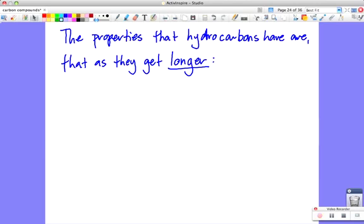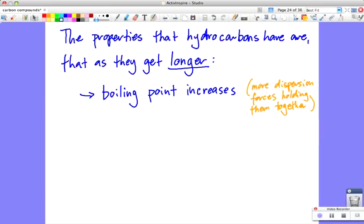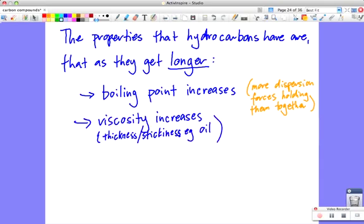So the properties that hydrocarbons have are that as they get longer, what happens? Their boiling point increases. And why would that be? That's because the longer they are, the more electrons they have floating around them, the more chance they have of these instantaneous dipoles, these dispersion forces holding them together. The longer hydrocarbons get, the more their viscosity increases. Viscosity meaning thickness or stickiness, for example, like oil. If you think about the difference between petrol, which is really quite thin, oil is actually really quite thick. How do we explain that? Ditto. Same as above. More dispersion forces holding them together.